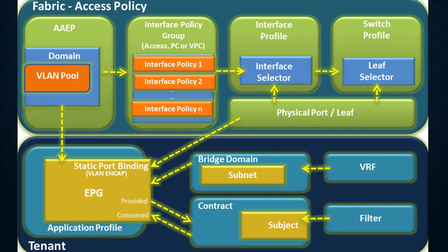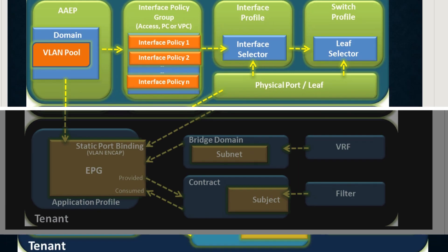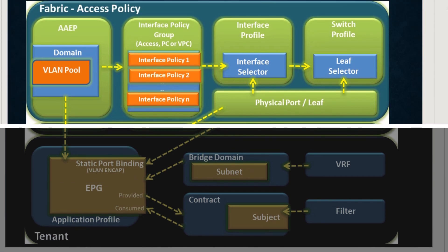In this session I will show you how to start configuring the ACI stuff through scripts. This diagram has two main components: the first one is the fabric access policy and tenant.